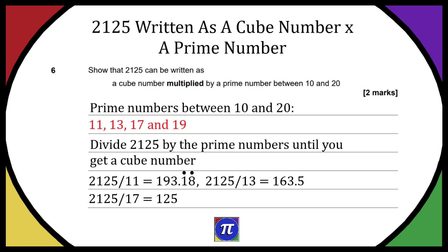But when we divide it by 17 we get 125, which is a cube number because it's 5 to the power of 3.